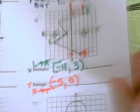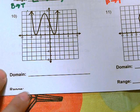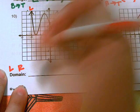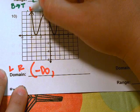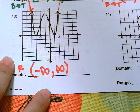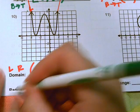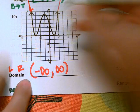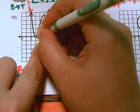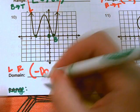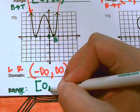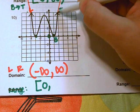Go ahead and pause the video and try number 10. The domain is from left to right — there are arrows on both sides, so negative infinity to positive infinity. For the range, the graph never goes below the x-axis, so those points have a y-value of 0. We use a bracket because the graph is solid there. Going to the top, the graph keeps going up, so positive infinity.